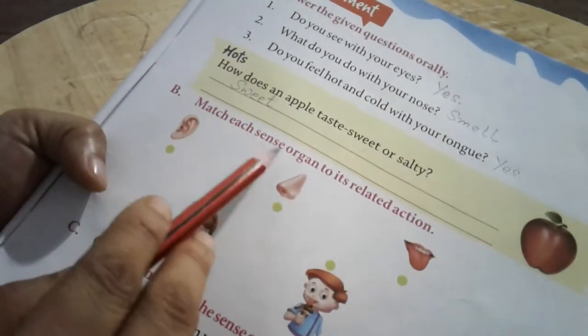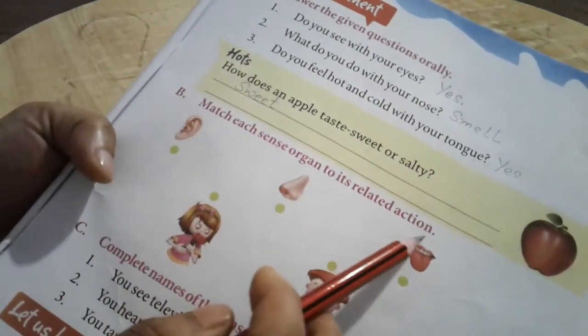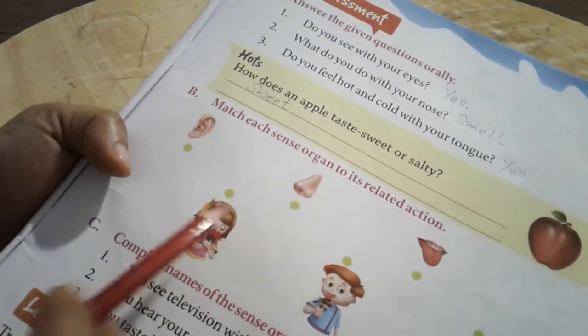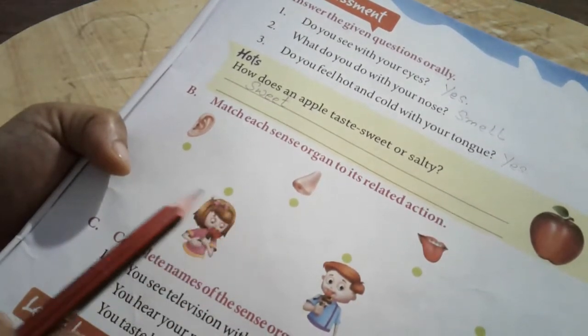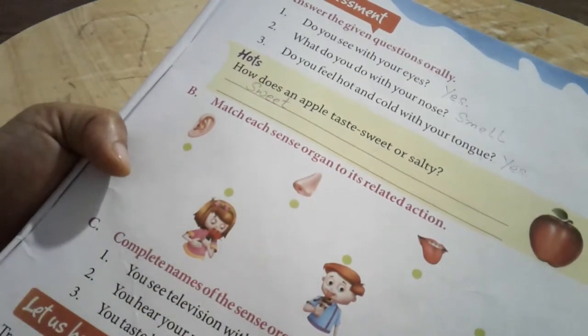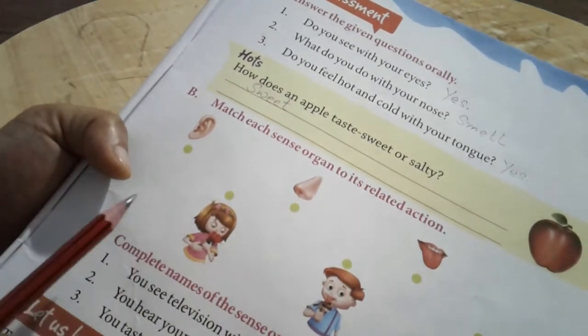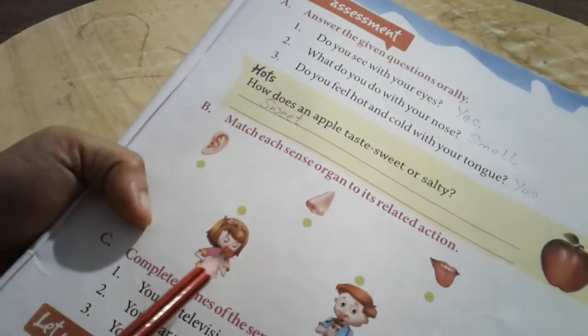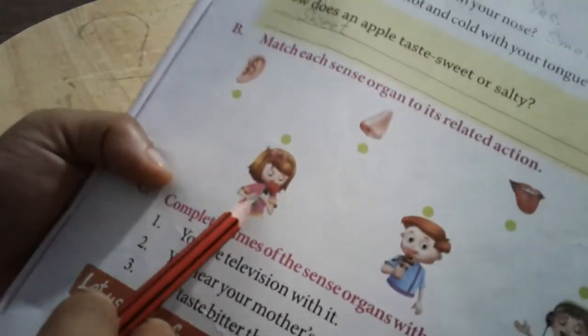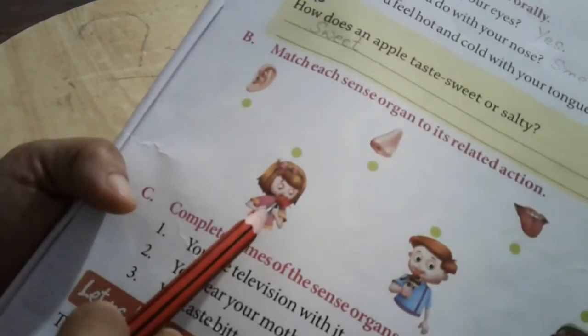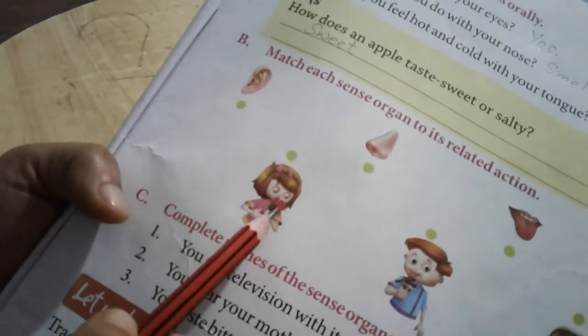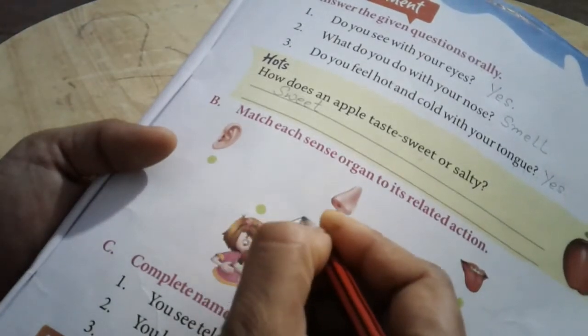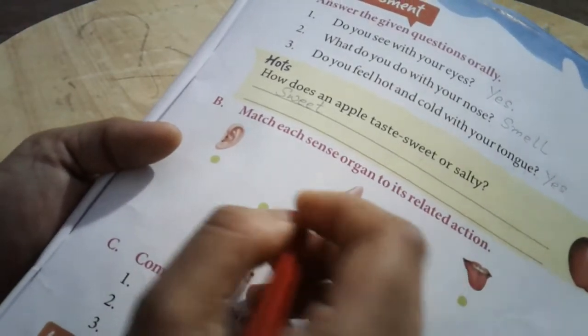Now, match each sense organ to its related action. We have to match three children together. Each child is using which sense organ. We have to match that. So this little girl is smelling a flower. Where does she smell? With her nose.